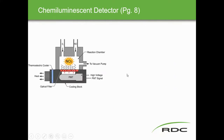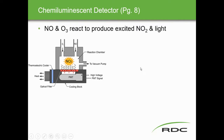The detector — the photomultiplying tube — has a cooling block and an optical filter. The NO2 and emitted light enter here. The reason it is cooled is to eliminate heat and reduce electrical noise. A high voltage is applied, and then the signal comes out. The cooling block acts as a heat sink. Any excess O3 ozone goes out to the vacuum pump.